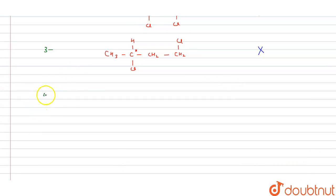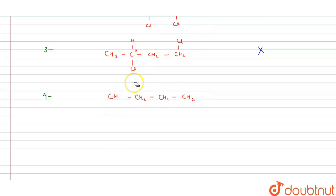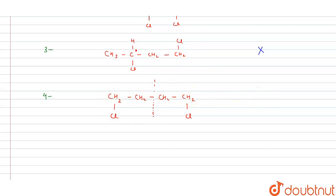The fourth isomer is CH2Cl-CH2-CH2-CH2Cl. One plane of symmetry is present, but there are no chiral centers — neither of the chlorine-bearing carbons is chiral, since each has two CH2 groups. So this is not a meso compound.